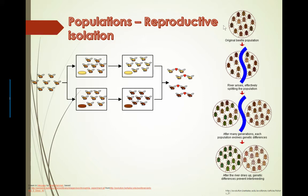Different groups of organisms belonging to the same population can actually be separated by a physical barrier. For example, some kind of river ends up separating two groups, or a lake dries out and becomes two smaller lakes or three or four smaller puddles. So you can separate fish populations like that.